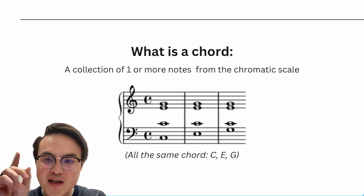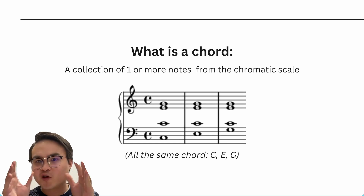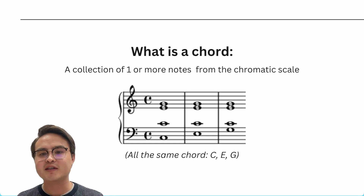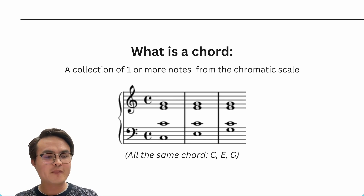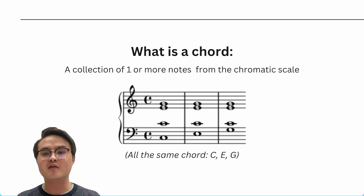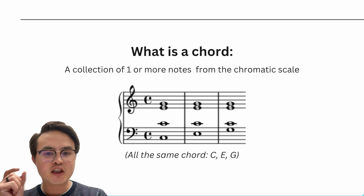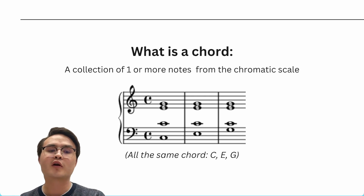What is important though is that, for example, these are not different chords. Even though these are different notes on staff paper — different notes, different keys of the piano — they are the same collection of C, E, and G, and that makes all three of these examples count as just one chord.